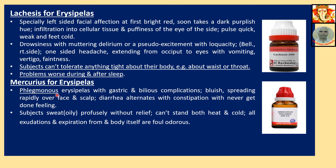Mercurius for Erysipelas: Phlegmonous Erysipelas — phlegmonous meaning a type of Erysipelas where subcutaneous tissue is affected and there is formation of abscess below it. Erysipelas with gastric and bilious complications; bluish discoloration spreading rapidly over face and scalp. Diarrhea alternates with constipation with a never-get-done feeling. Subjects sweat profusely without relief — this is a characteristic of Mercurius. Cannot stand both heat and cold. All exudations and excretions from the body, and the body itself, are foul. Very foul odor is also characteristic of Mercurius.